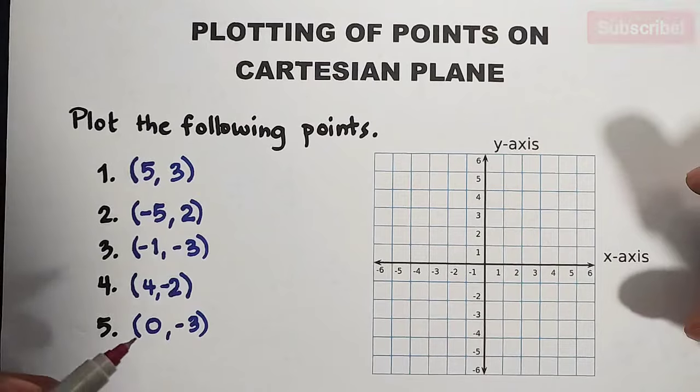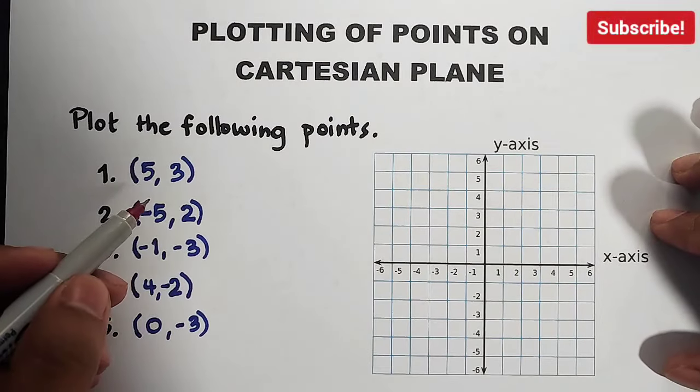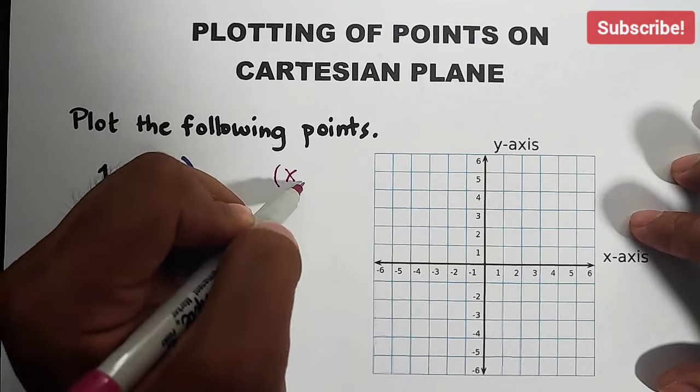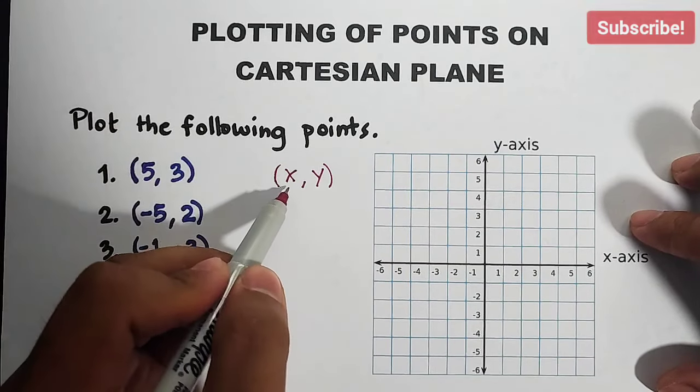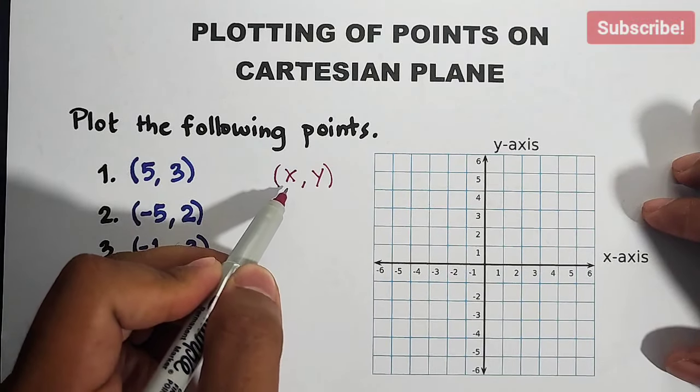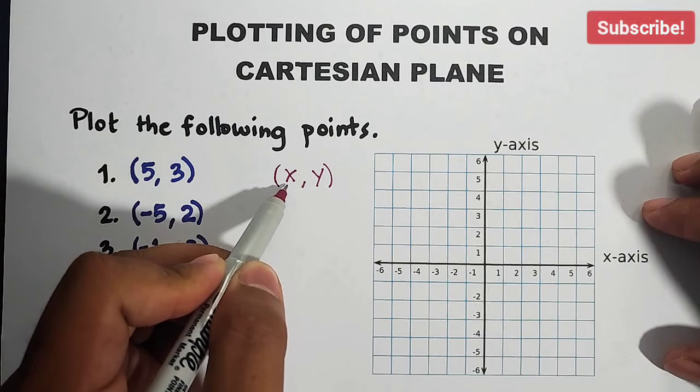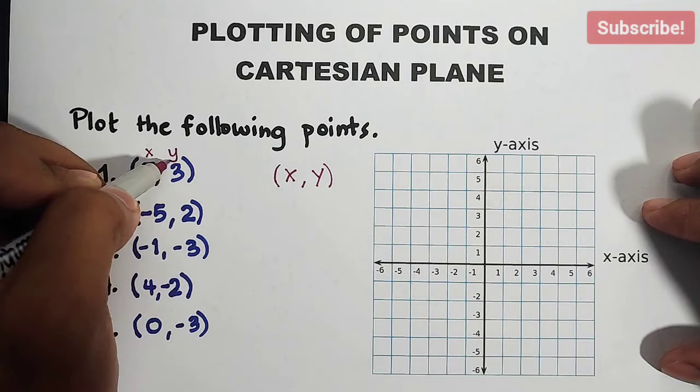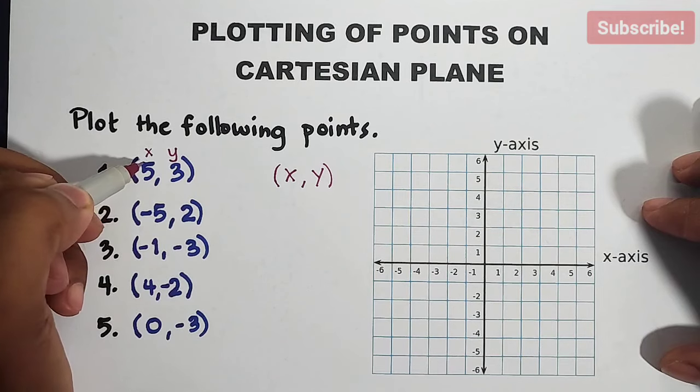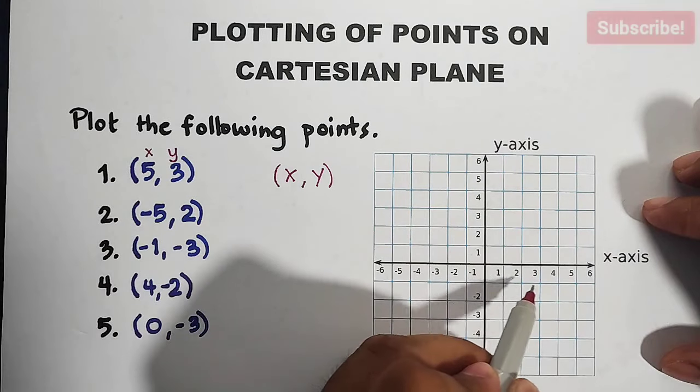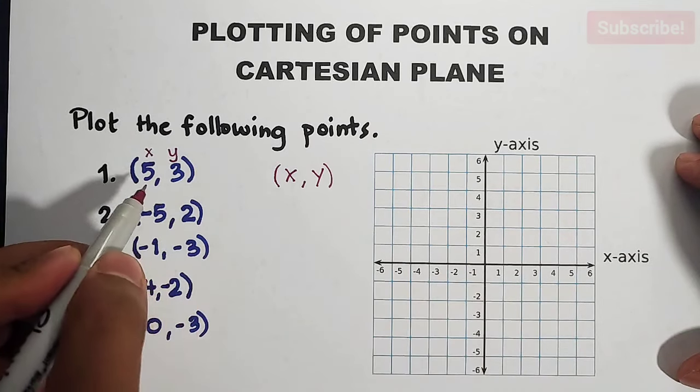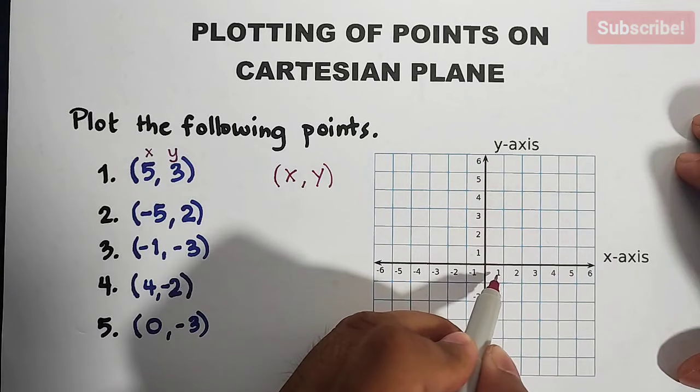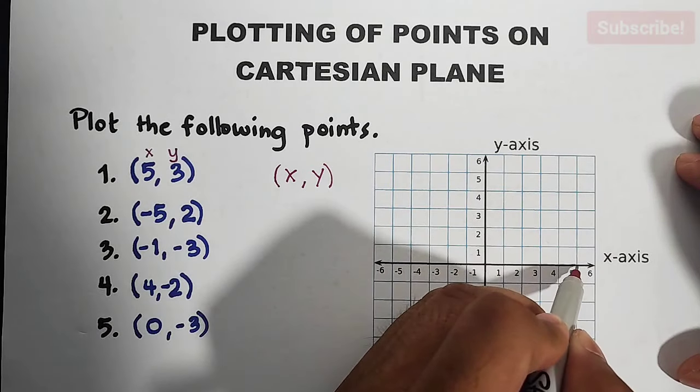If you notice guys, our Cartesian plane or our ordered pair, the format is really x,y. Always look first at the x value or our abscissa. Here in our (5,3), this is your x and this is your y. If 5 is equal to x, meaning you will go through the x-axis and find where is 5 or positive 5 on our x-axis and definitely it is located here on the right side.